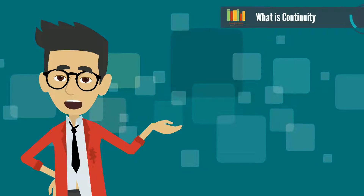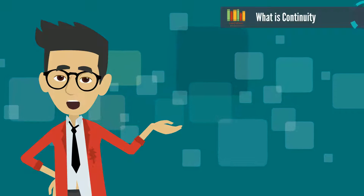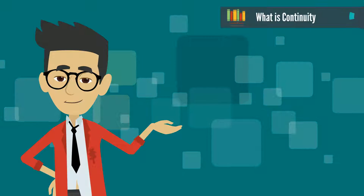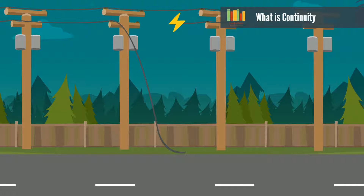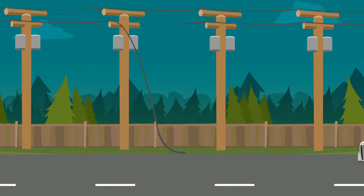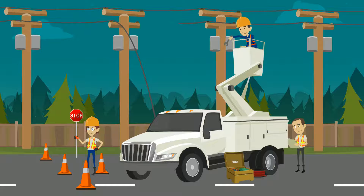Before we get into details, we need to understand what is continuity and how it is different from continuous and continual. Consider an example of an electric cable link broken. Here electricity is the service provided — we no longer have the service once the link is broken. The electricity service is completely interrupted and cannot be restored immediately. Either it has to be fixed soon or routed through another channel. The electricity will not be available until the issue is fixed or routed through another channel. This is called continuity.